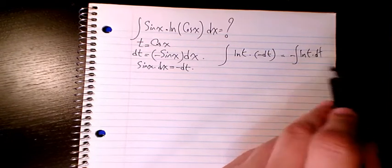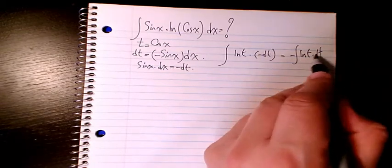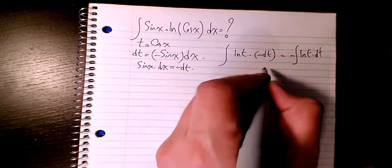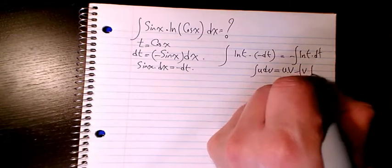For the integration of ln(t) dt, I need to use integration by parts. So integral of u dv equals u times v minus integral of v du.